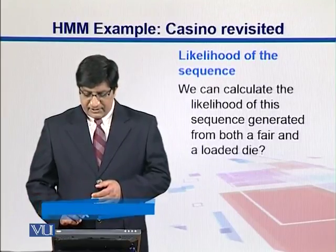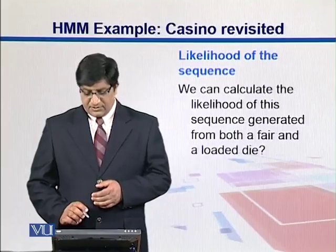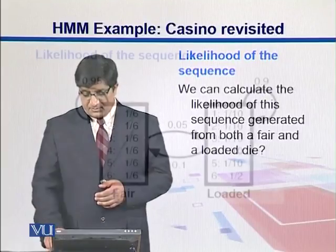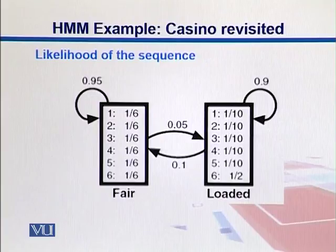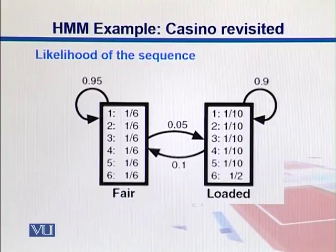So we can calculate the likelihood of this sequence being generated from a fair or a loaded die. We know these probabilities, we worked upon them and we came to know that these are the different state transition probabilities as well as the symbol emission probabilities.